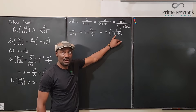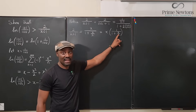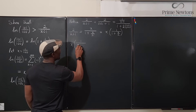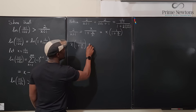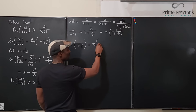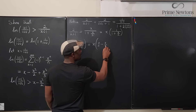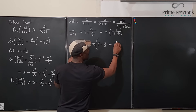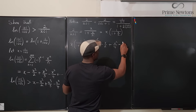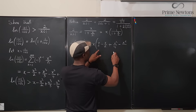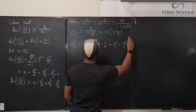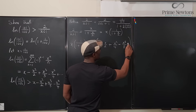Writing out the geometric series for 1 over 1 plus x over 2, the common ratio is negative x over 2. So x times 1 over 1 plus x over 2 equals x multiplied by 1 minus x over 2 plus x squared over 4 minus x cubed over 8, and so on. Distributing x gives x minus x squared over 2 plus x cubed over 4 minus x to the fourth over 8, plus further terms.